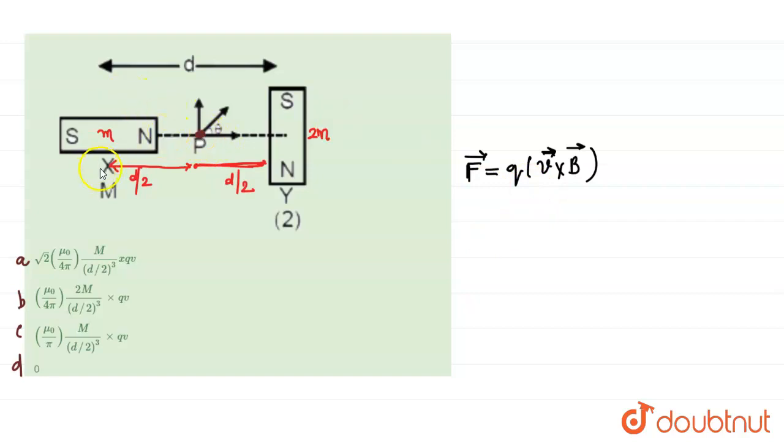First we can consider the dipole X and point P. Along X, point P is axial. So the charged particle is placed at point P and the magnetic field at point P, let it is B1, it is given by 2 into mu 0 by 4 pi M divided by distance D by 2 cube. So the point P is axial to M. So the direction of magnetic field is outside and along the axial line.